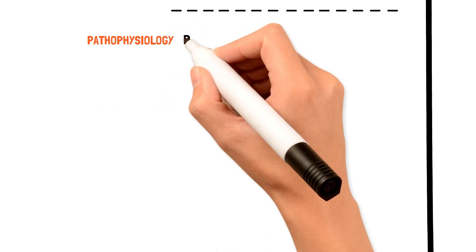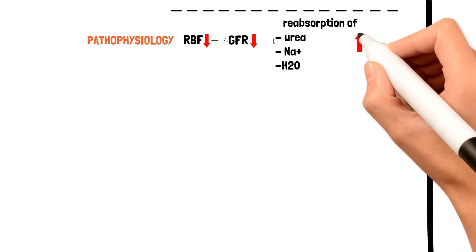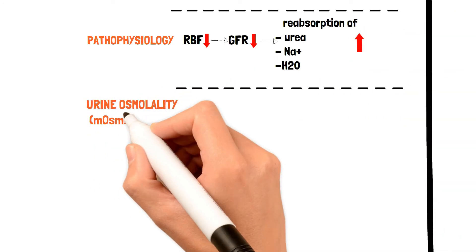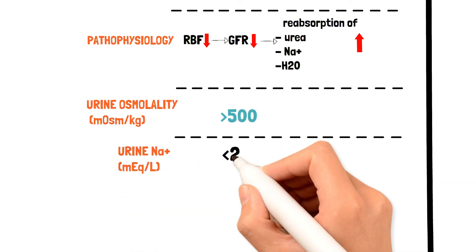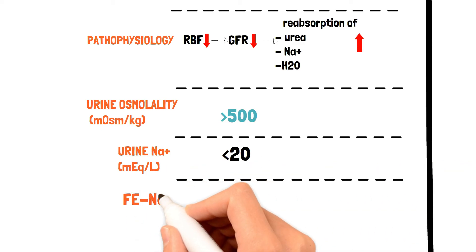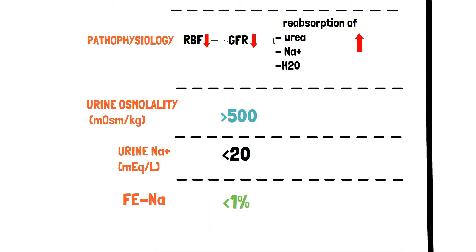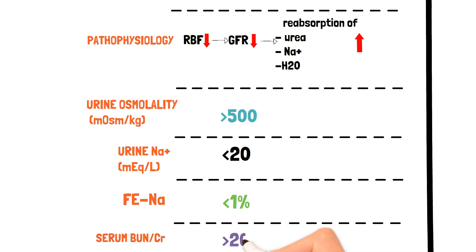To summarize pre-renal AKI: when renal blood flow decreases, more urea, sodium, and water are reabsorbed back into the blood. Urine osmolality will be greater than 500 milliosmoles, urine sodium concentration will be less than 20, and the FENa (fractional excretion of sodium) will be less than 1%, because we are absorbing more sodium and very little is being excreted. The serum BUN to creatinine ratio will be greater than 20.